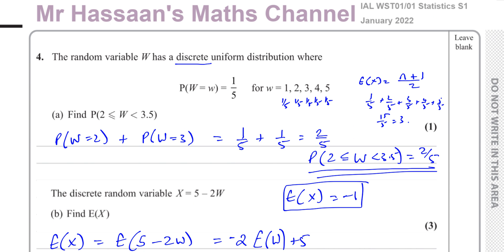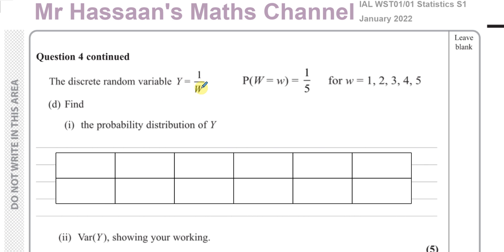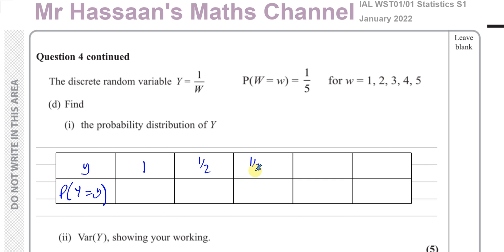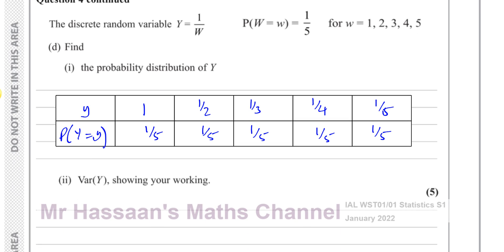Part D: the discrete random variable Y equals one over W. We need to find the probability distribution of Y. The Y values are: when W = 1, Y = 1; when W = 2, Y = one-half; when W = 3, Y = one-third; when W = 4, Y = one-quarter; when W = 5, Y = one-fifth. All probabilities remain one-fifth, since it's a uniform distribution.